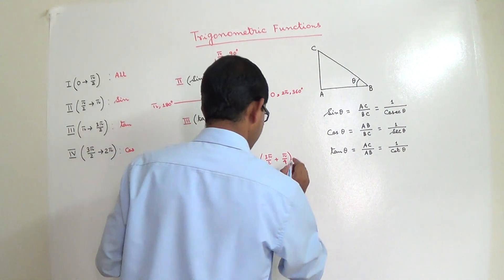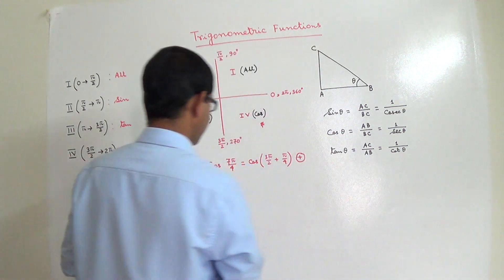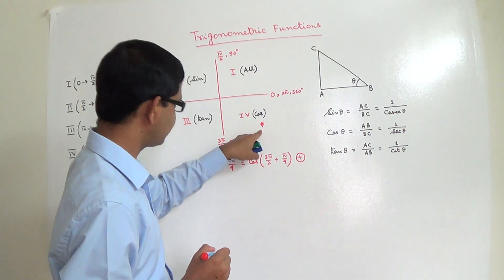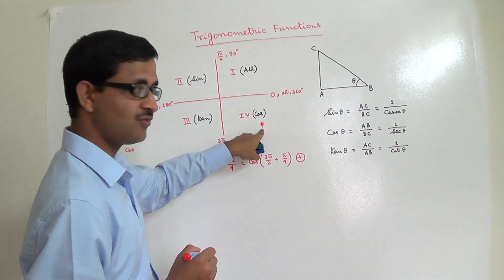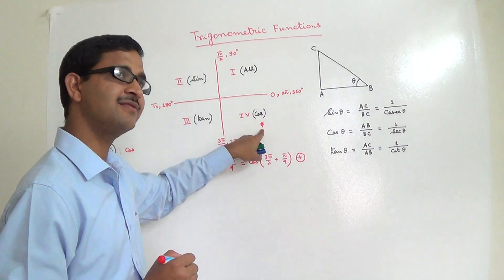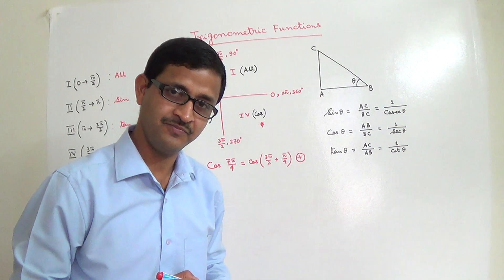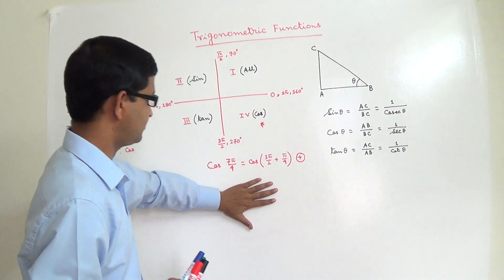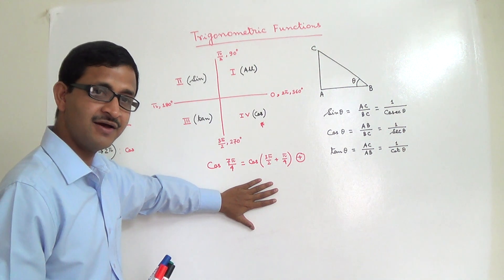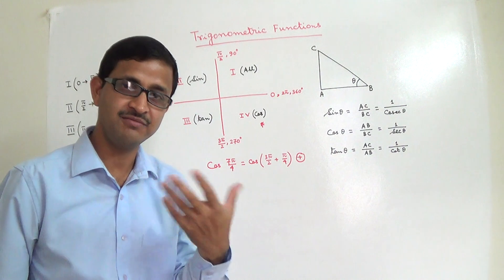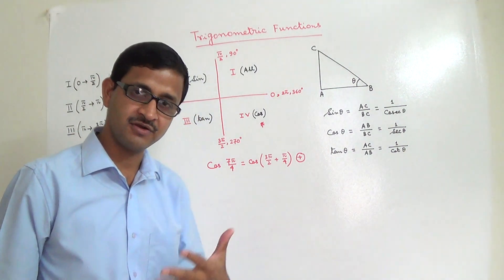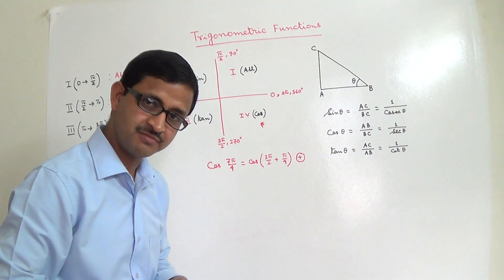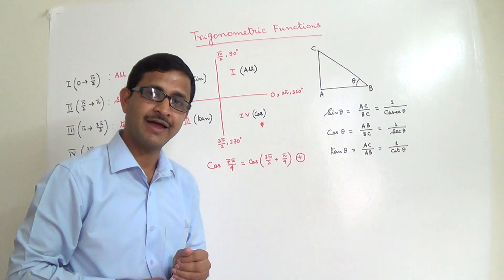Similarly, if someone asks for sin(7π/4): since 7π/4 is in the fourth quadrant, and in the fourth quadrant sine is negative, we can directly say sin(7π/4) is negative. Spend a couple of minutes understanding how to determine the sign — positive or negative — of any trigonometric function using the 'All Sine Tan Cos' rule. Then we will move to the next topic: Allied Angles.